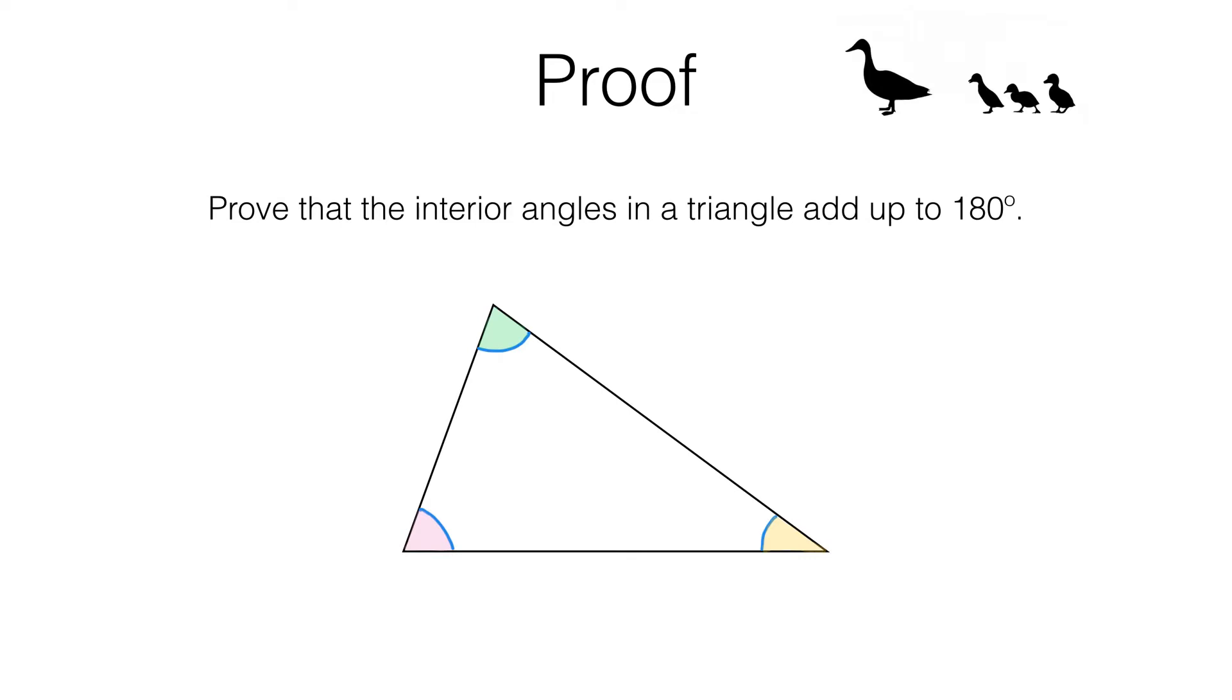Right, let's get into the proof. So, it doesn't matter what triangle we have, we're going to have three interior angles. Whatever they are, I can label them x, y and z degrees.